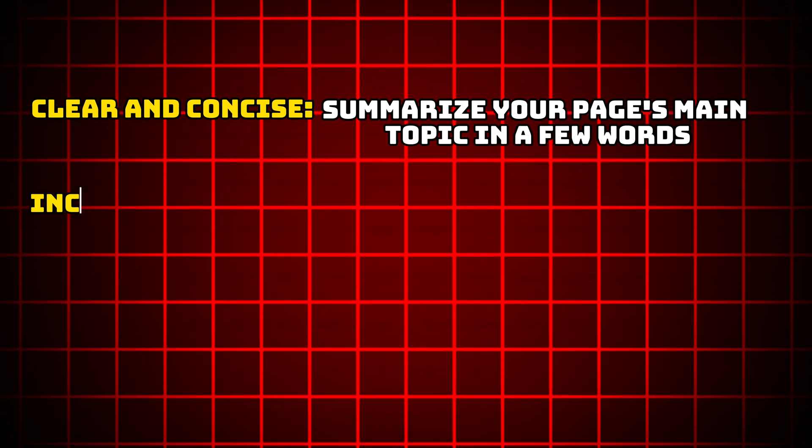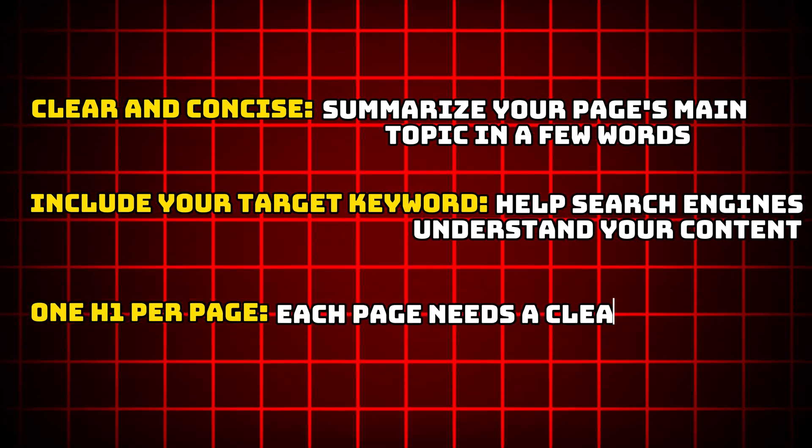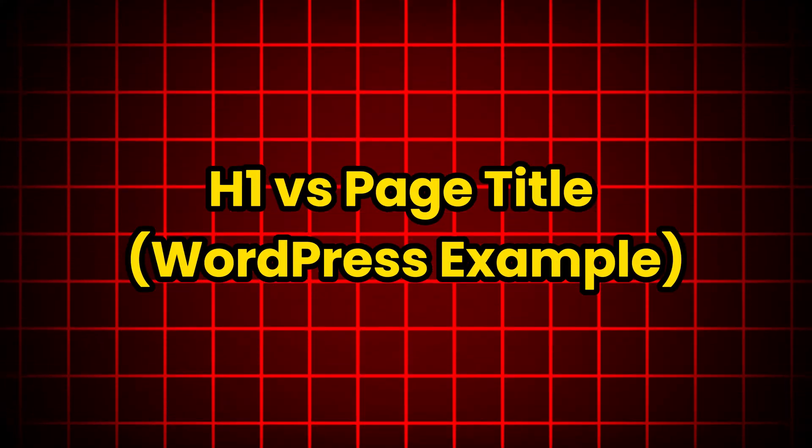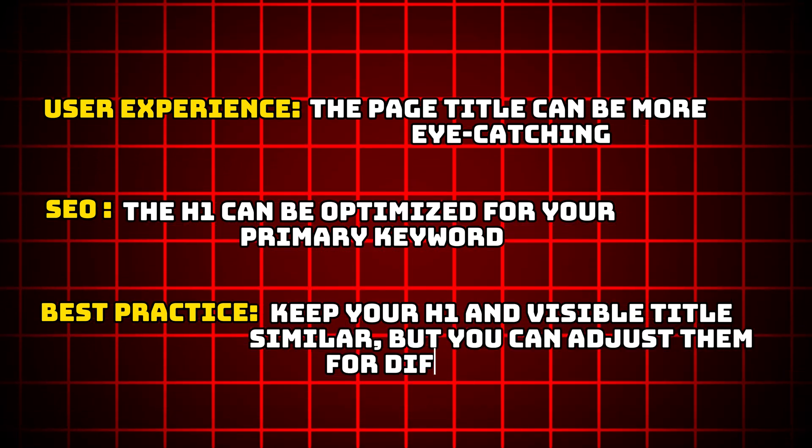H1 tag — your page headline. Think of your H1 tag as the most important title on your webpage. Here's what you need to know: keep it clear and concise, summarizing your page's main topic in a few words. Include your target keyword, which helps search engines understand your content, and use only one H1 per page — each page needs a clear singular focus. Why only one H1? Your website is like a book and the H1 is its title; imagine how confusing a book would be with multiple titles. Let's clear up a common point of confusion, especially if you use WordPress. When you type in your blog post title, you think you are setting the page title, but you are actually setting the H1. The H1 can be optimized for your primary keyword. Best practice: keep your H1 and visible titles similar, but you can adjust them for different purposes.